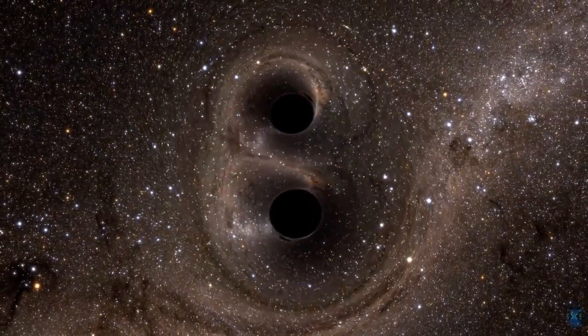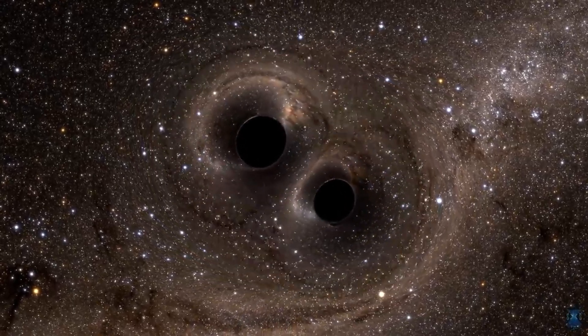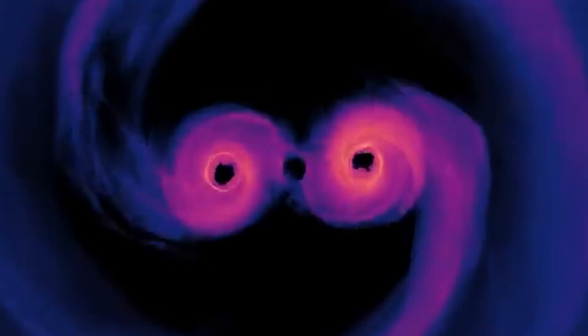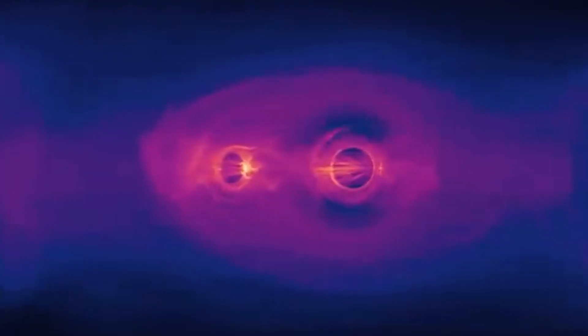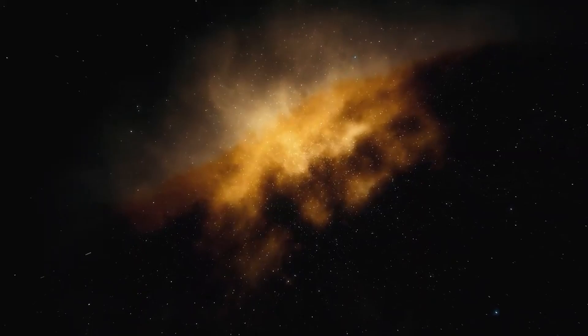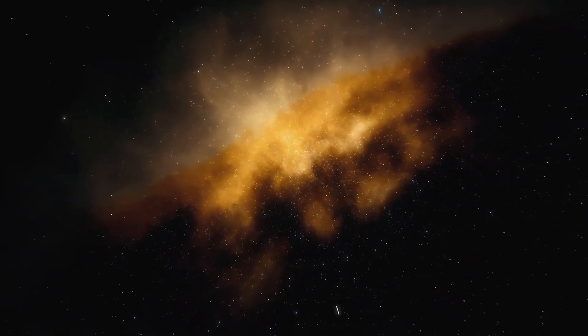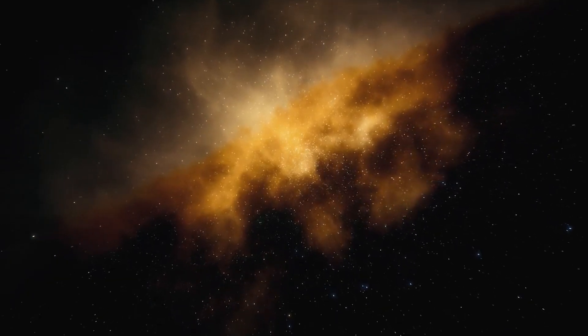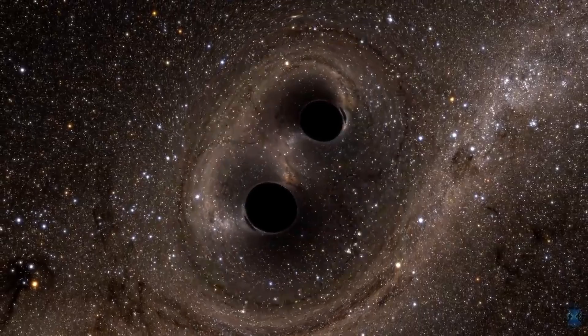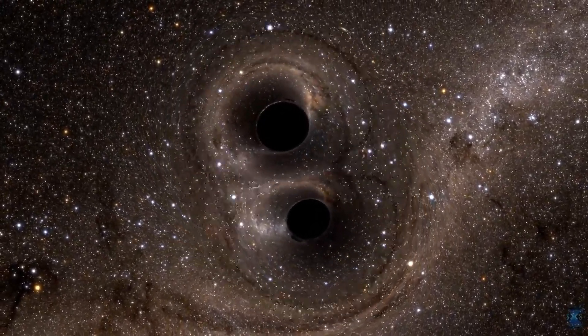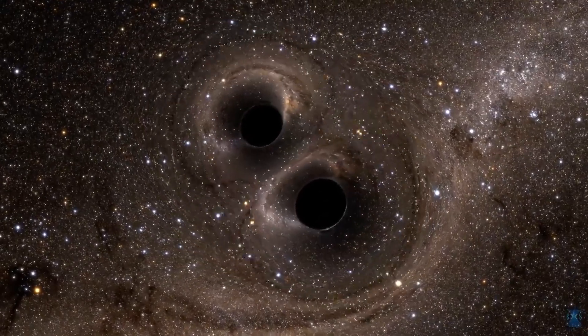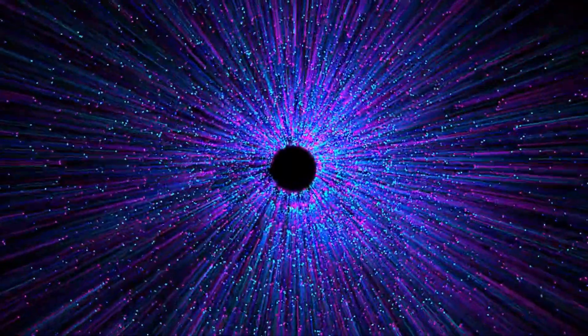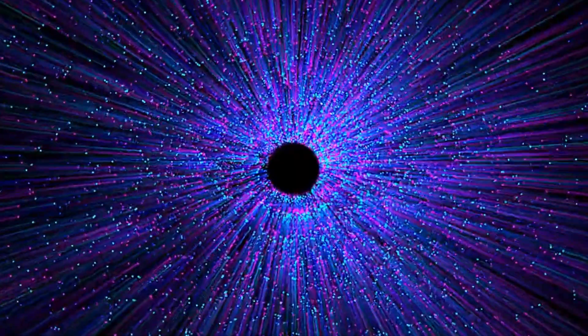Two theories attempt to elucidate the formation of binary black holes. The first proposes that both black holes originate simultaneously from a pair of stars born together and subsequently undergoing explosive deaths at similar times. These companion stars would possess parallel spin orientations. The second model posits that black holes within a stellar cluster coalesce at the cluster's core. In this scenario, the spin orientations are expected to be random. LIGO's observations, particularly those revealing companion black holes with disparate spin orientations, offer stronger support for this formation theory.